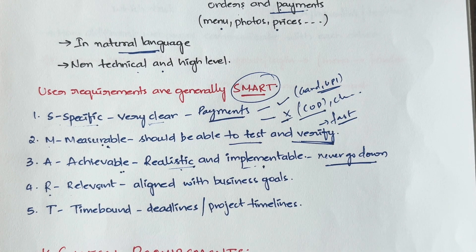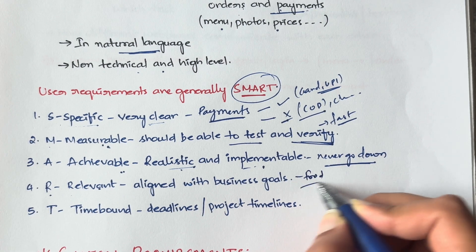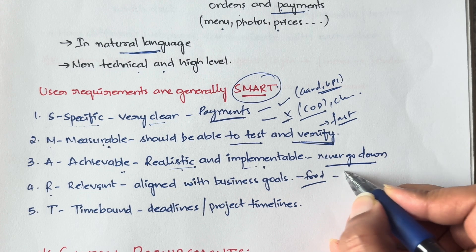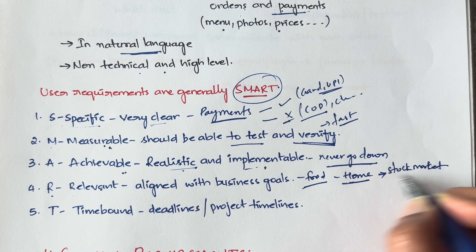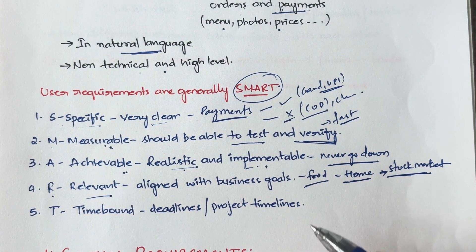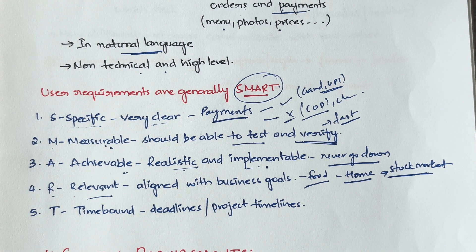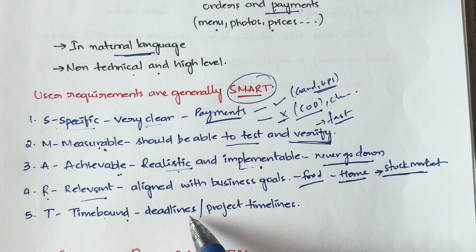R stands for Relevant — requirements must align with the business goal. For example, in our home food business website, if you display stock market data on the home page, that is irrelevant. However, displaying nutrition information, calorie counts, or protein content of food items would be relevant. Requirements must be according to the business domain.